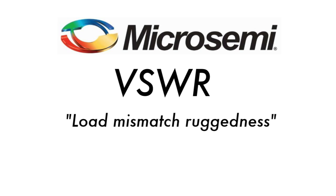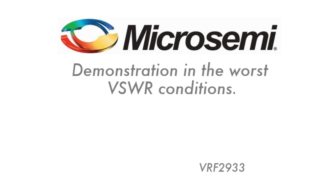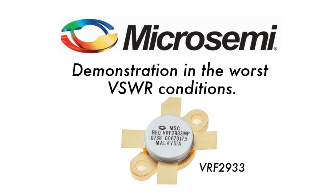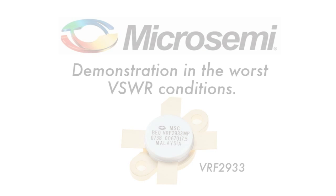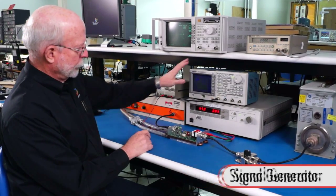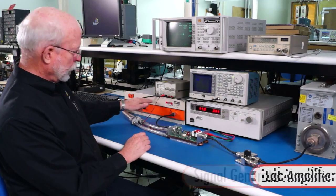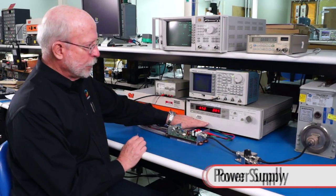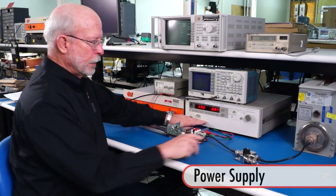MicroSemi's line of VRF devices was developed to address this need. This is a demonstration of the ruggedness and capability of the VRF series of power MOSFETs. In this demonstration, we will run an amplifier that uses MicroSemi's VRF2933 300W VDMOS devices in the very worst of SWR conditions to show its considerable ruggedness capabilities.